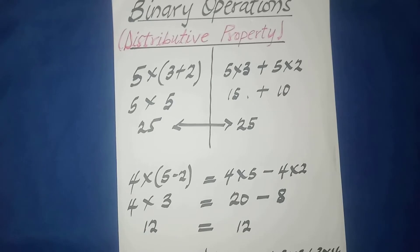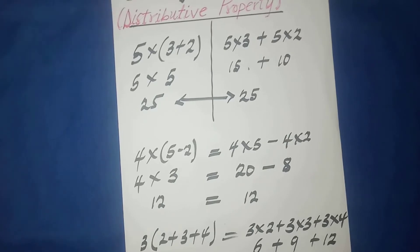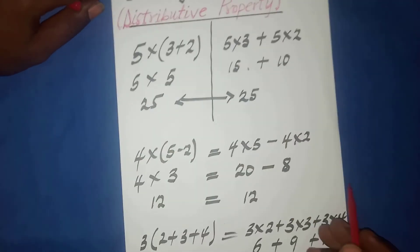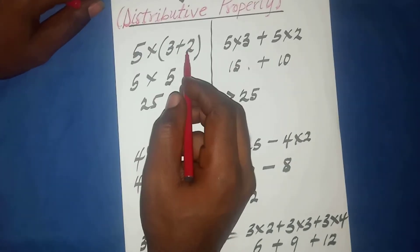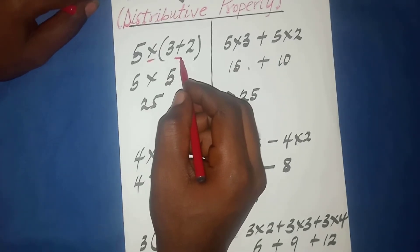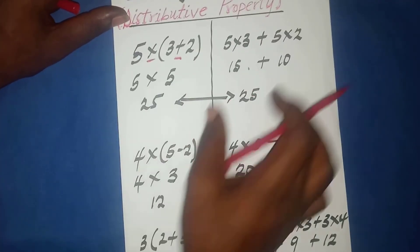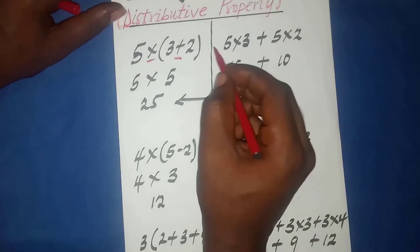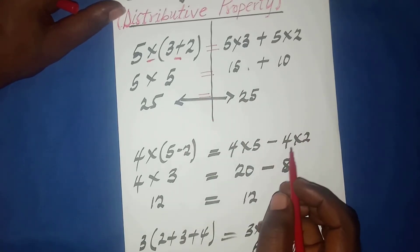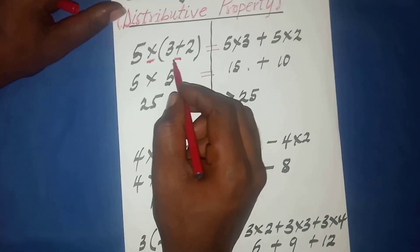Now let's go back to binary operations. In our first example, five times three plus two, we had two operational signs — multiplication and addition. We performed the operation using both the order of operations and the distributive property, and both methods gave equivalent answers. Therefore, we say that multiplication is distributive over addition.